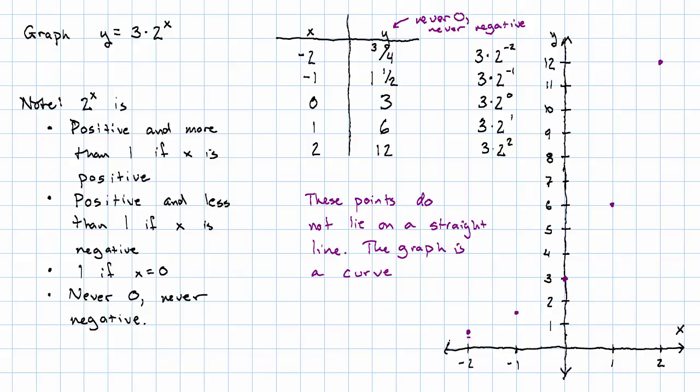The graph is a curve that looks something like this. Off to the left, what does it do? It keeps getting close to the x axis, but it never gets there. Y is never actually 0. And it never crosses.